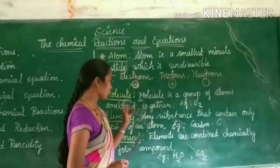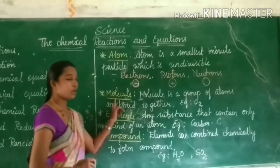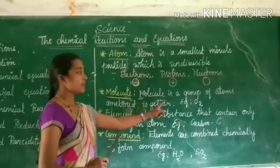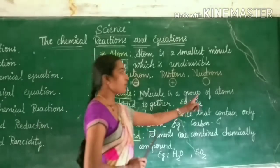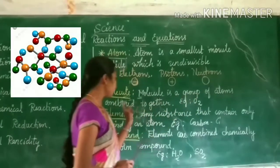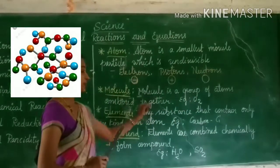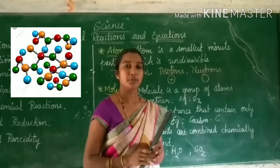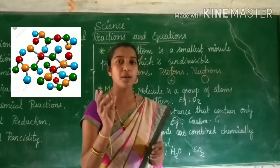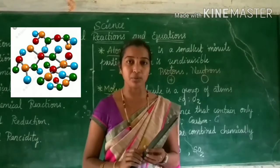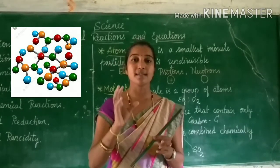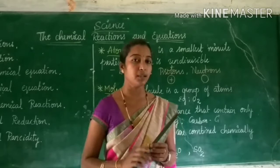Now let's come to molecule. A molecule is a group of atoms combined together. A group of atoms combined together forms a molecule. For example, an oxygen molecule contains only oxygen atoms.